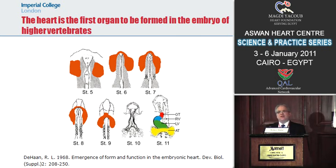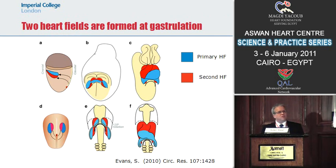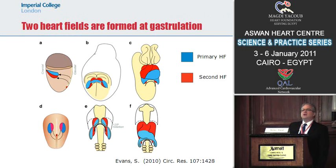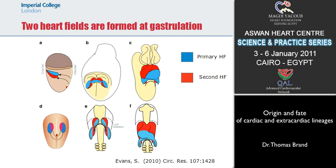From the traditional view, we had only one single heart field and everything is formed in one process — but this is the wrong concept. It looks like the heart is formed in several steps, where gradually new cells are added to the myocardium, making it more and more complex. These different cell types interact between each other, adding complexity and generating the mature myocardium. One such concept is that the heart field is divided into two pieces: the primary heart field, labeled here in blue, and the second heart field, labeled here in red.